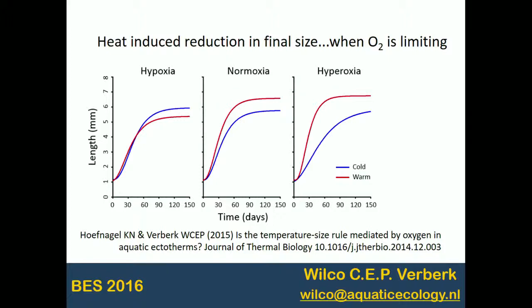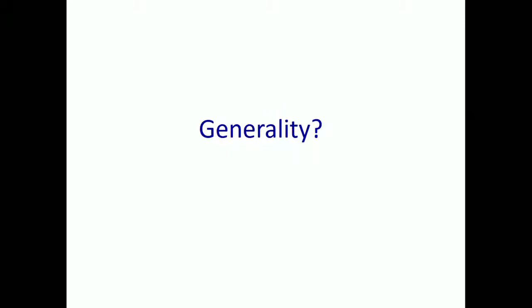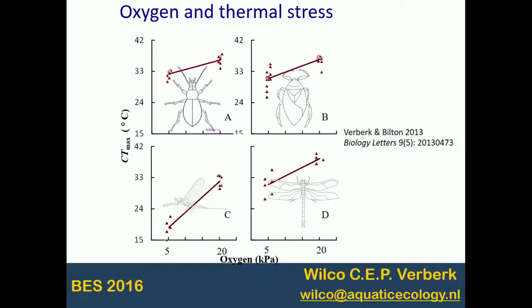On to the second and last part: the generality. Can we predict which species are more likely to be at risk, and are there traits associated with that? We compared across four different orders of insects and found the same pattern — a reduction in CTmax with declining oxygen tension in each of those orders. But in each group, we could also find animals that didn't show this effect.